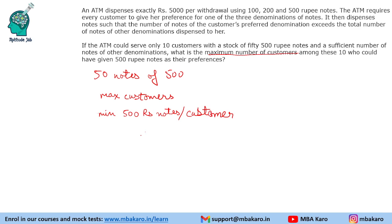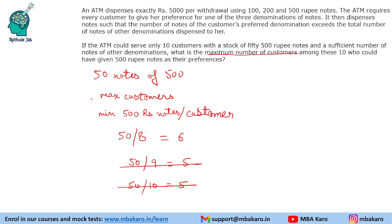If you give 8 notes of ₹500 per customer and there are 50 notes in stock, you can serve 6 customers. If you try to give 9 notes per customer, you can only serve 5 customers; similarly with 10 notes per customer, also only 5 customers. So to serve the maximum customers, give the minimum of 8 notes of ₹500 per customer, allowing you to serve 6 customers.